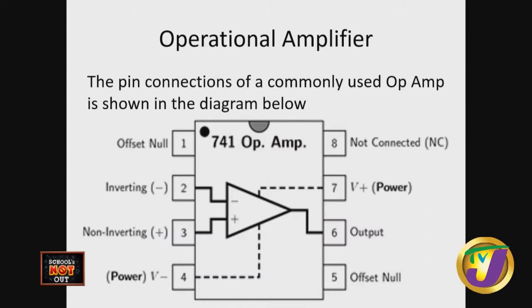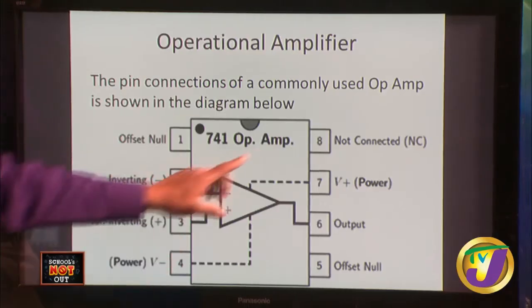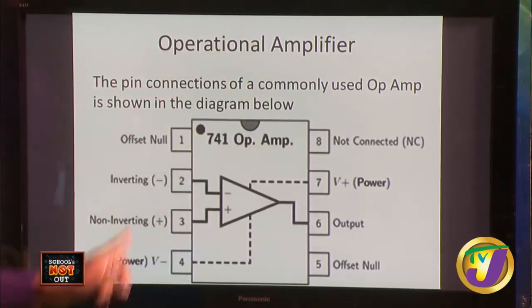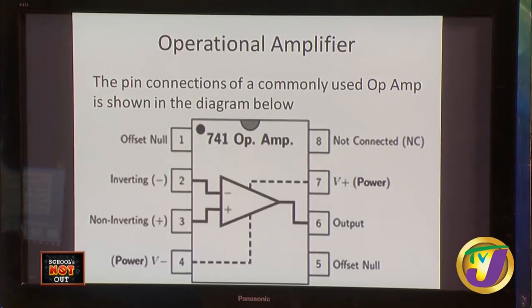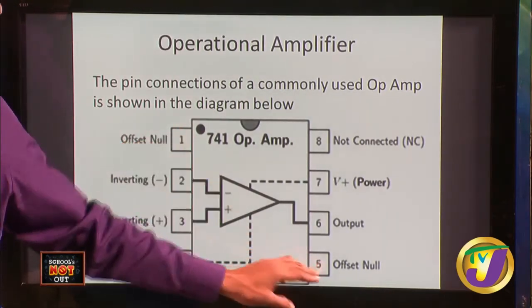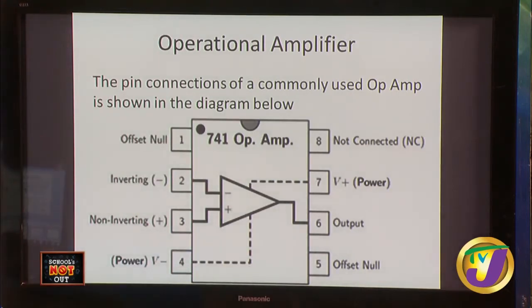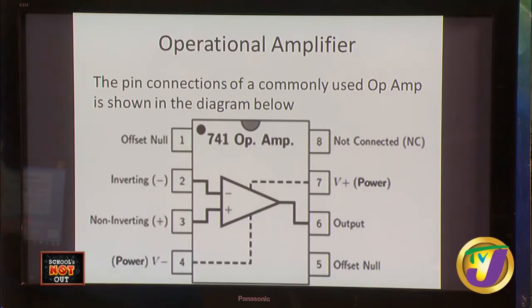Here is a diagrammatic representation of the connections to an operational amplifier. There are eight connections numbered anti-clockwise. Terminals one and five are the offset terminals — used to zero the amplifier so that when you have zero input you get zero output, because normally an op-amp may give an output even with zero input due to internal electronics. Terminals two and three are the inverting and non-inverting inputs.